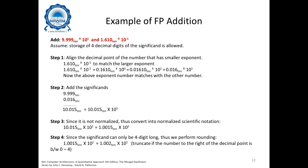1.610 × 10⁻¹ becomes 0.1610 × 10⁰, then 0.01610 × 10¹. As we shift the fraction to the right, the exponent becomes larger. We stop at 0.016 × 10¹ because the exponent now matches the larger number (9.999 × 10¹), so the exponent-matching and shifting process stops.